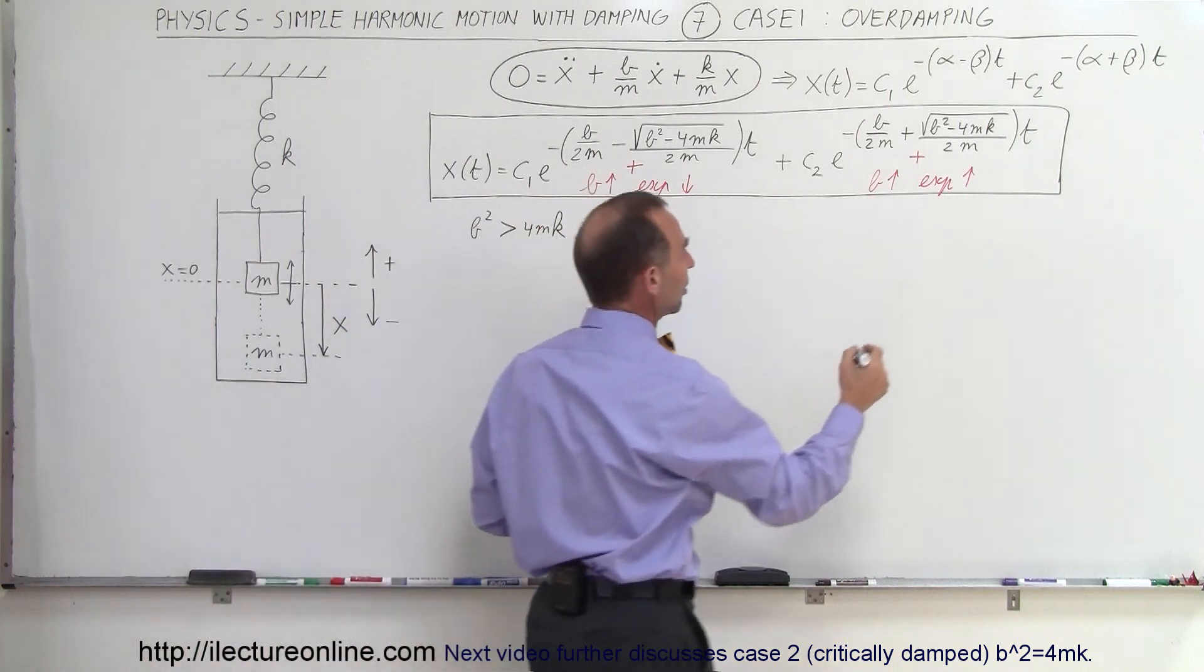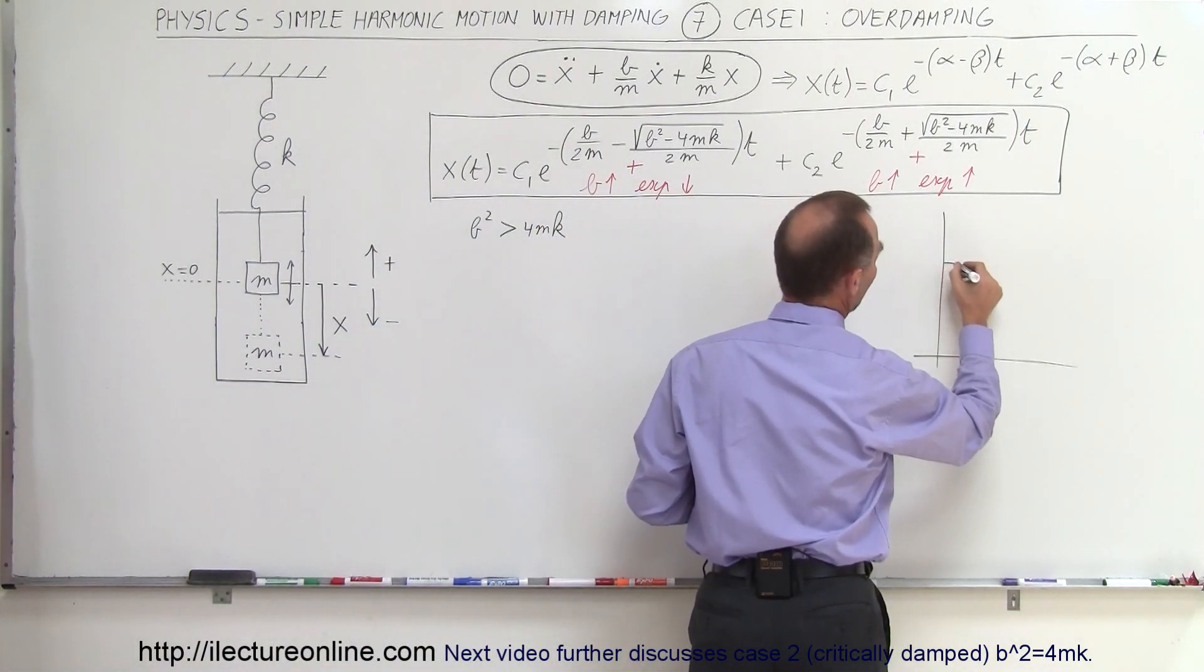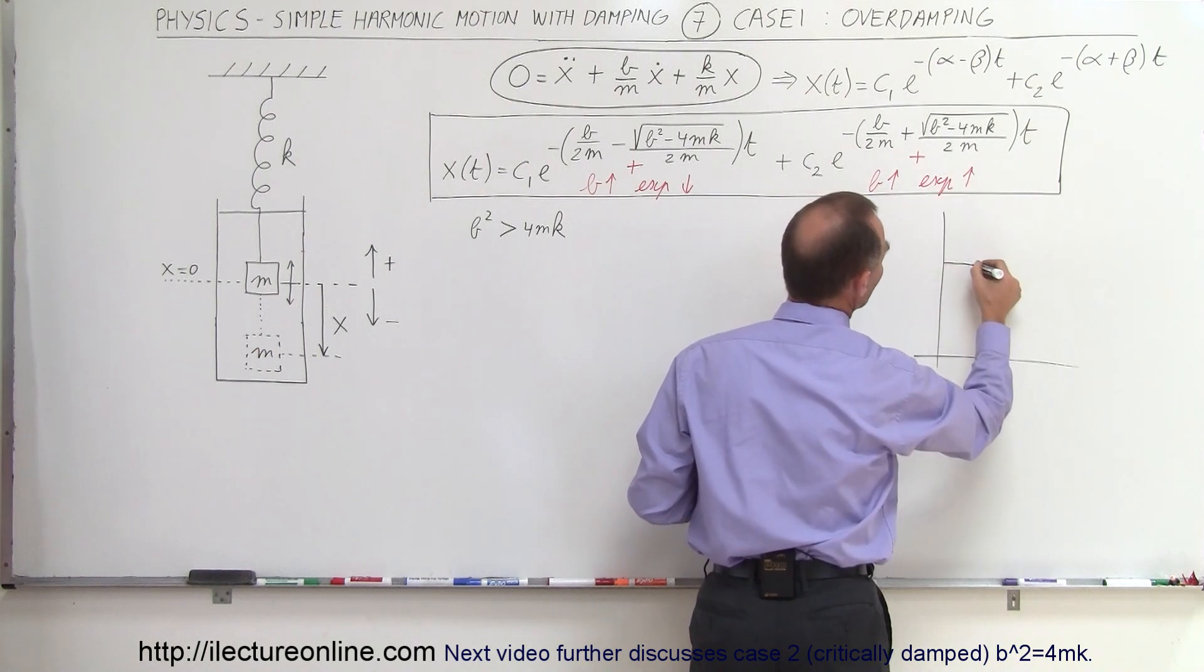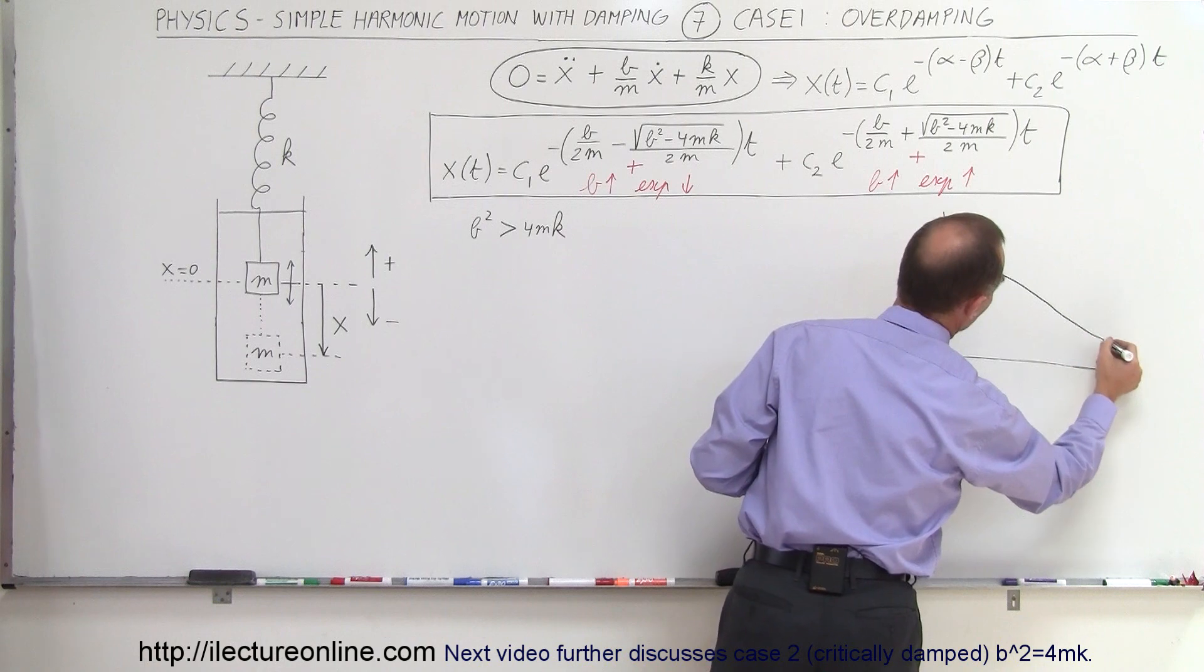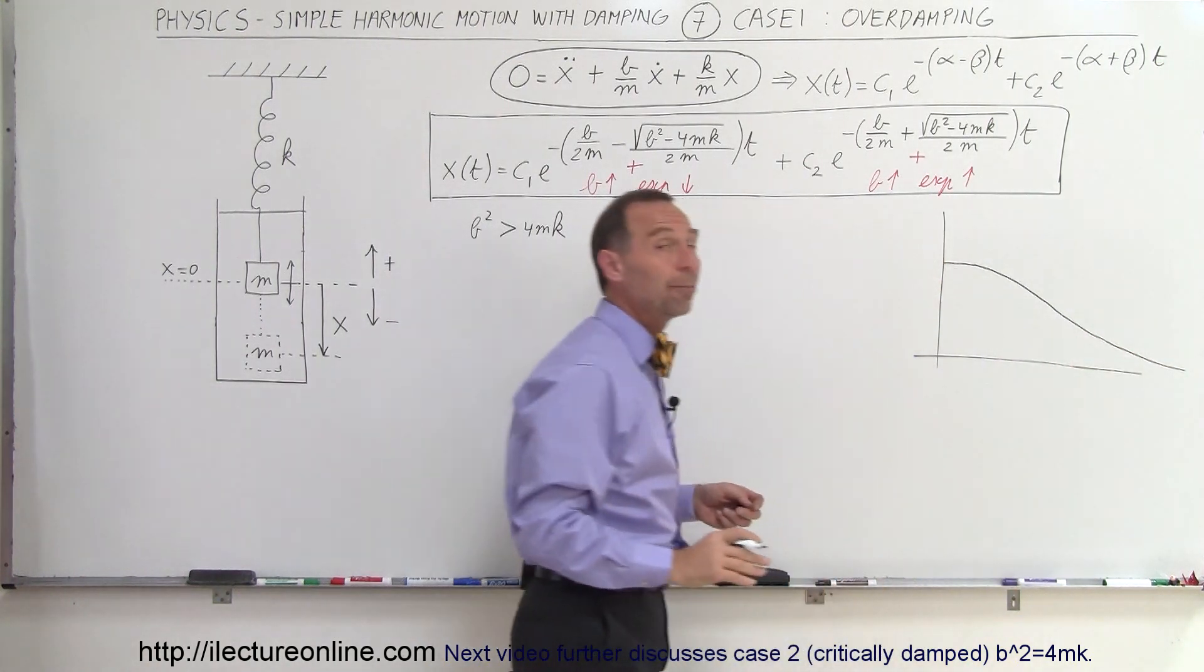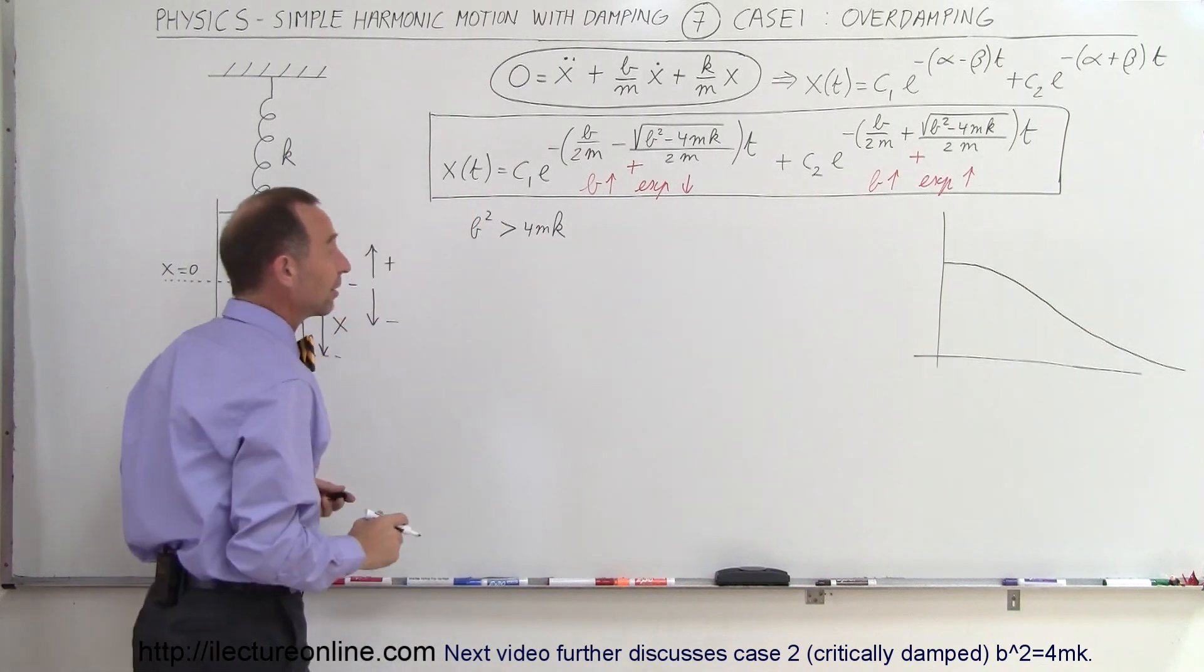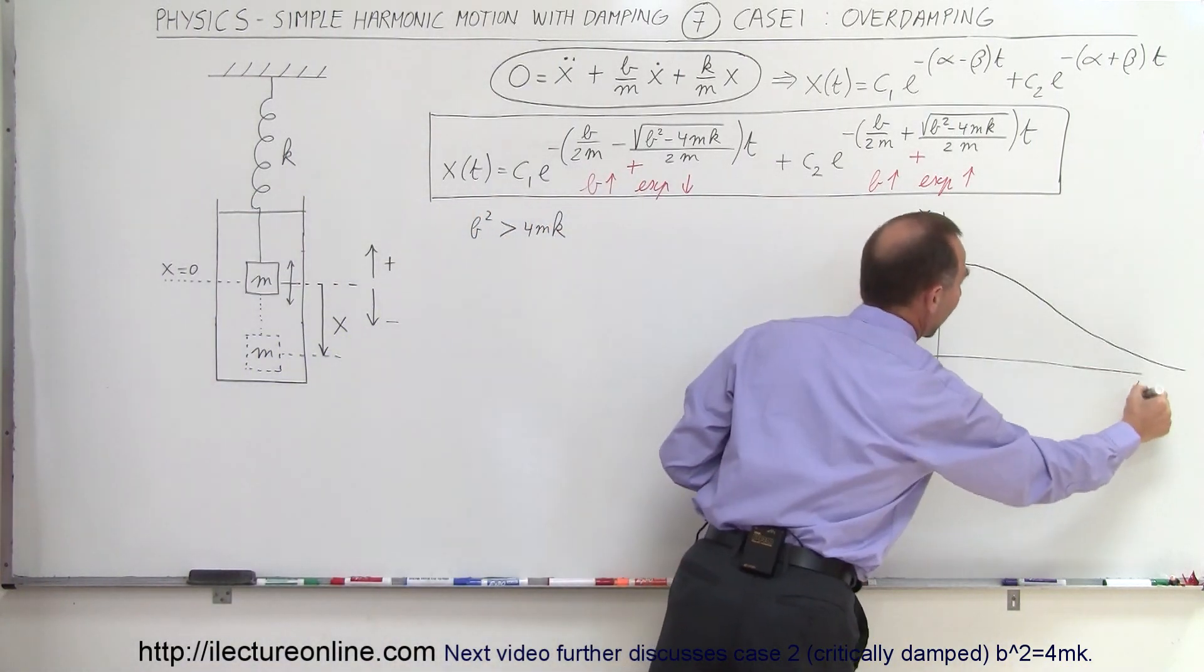So what you'll end up with is you'll end up with something that kind of looks like this. So initially, you'll have a very small decay. Then the decay will just tend to increase, and then it'll kind of level off over time like this. And eventually, it'll go back to the equilibrium point. It may take a while, but you'll eventually get there.